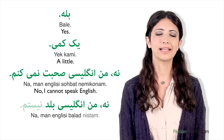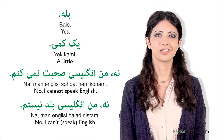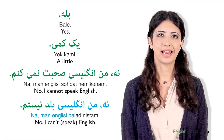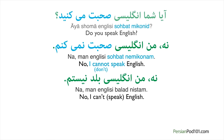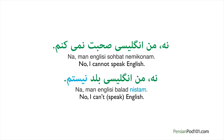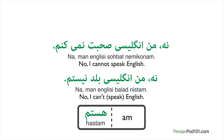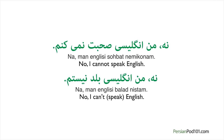Or: 'Na, man ingilisi balad nistam' — No, I can't speak English. Since this is a negative reply to a yes or no question, we say 'na,' meaning no, at the beginning. We also say 'nemikonam,' meaning 'don't,' after the verb 'sohbat,' meaning talk or speak. Or 'nistam,' meaning 'am not,' after the verb 'balad,' meaning can. So 'sohbat nemikonam' means 'I don't speak' and 'sohbat nemikonid' means 'you speak.' Also, 'nistam' is the negative version of 'hastam,' but it looks slightly different in the negative form. Verbs and phrases change depending on the person speaking.